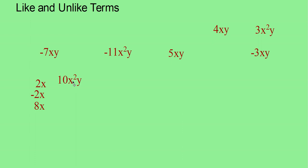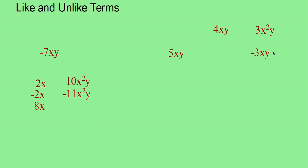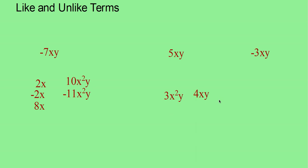Let me take 10x squared y. What are the like terms among the terms given above? Here you will get negative 11x squared y and here you can get 3x squared y. Is 3x squared y and 4xy like terms? No. Here you have x squared but here only x, so these two will not form like terms. So they are unlike terms.